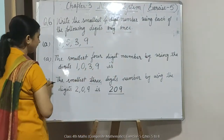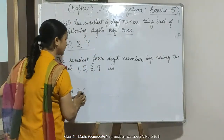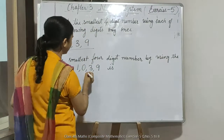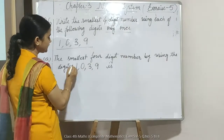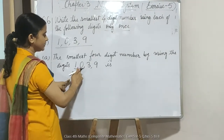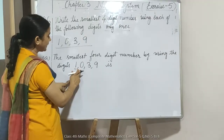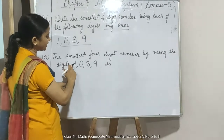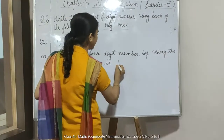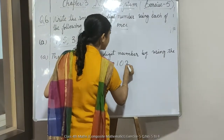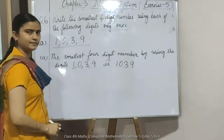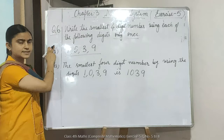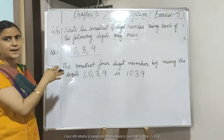अब क्या करेंगे — इन digits को increasing order में लिख लेंगे। यहाँ पर सबसे छोटा number 0 होता है, लेकिन 0 को हम पहले नहीं लेंगे। पहले 1 लेंगे, 1 के बाद 0, यानि कि 1, 0, 3, 9 — answer है 1039। तो question number 5 और 6 same इसी pattern पर करेंगे।